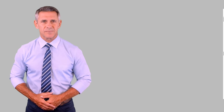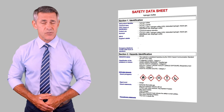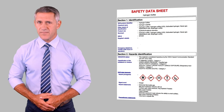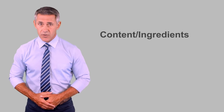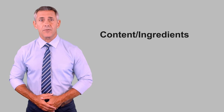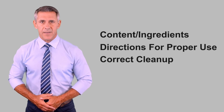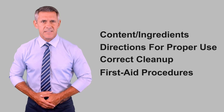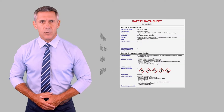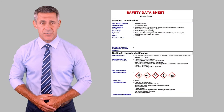Two: safety data sheets, or SDSs for short, contain comprehensive information about hazardous materials, including their content, ingredients, directions for proper use, correct cleanup, and first aid procedures. An SDS must be available to workers for every hazardous product that is used.